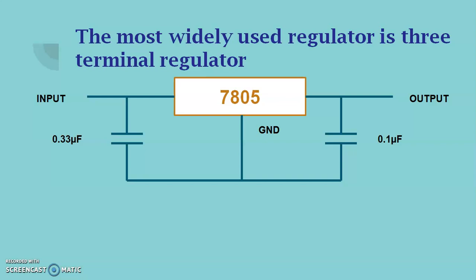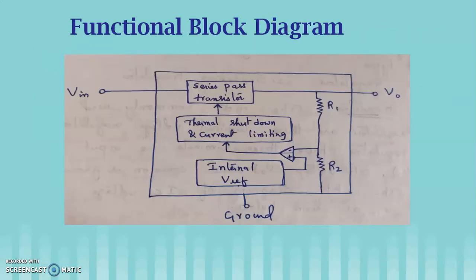You can see here the three terminal voltage regulator, which has three pins: it has one input pin, one output pin, and a ground pin. So it has three terminals, hence it is called a three terminal voltage regulator. This is the functional block diagram of the three terminal voltage regulator.